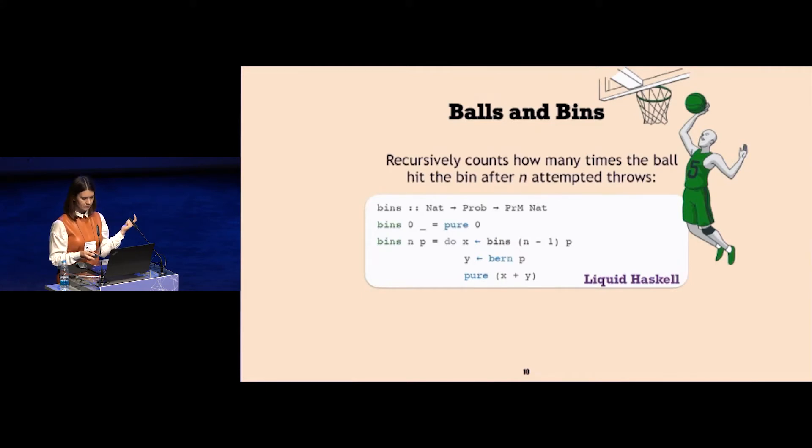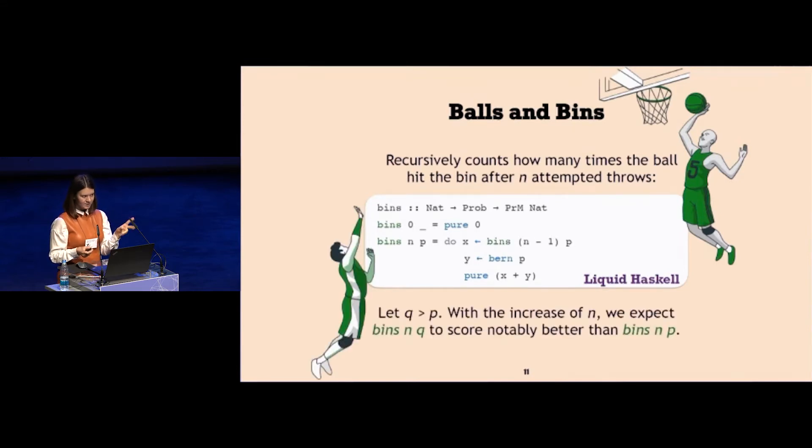Remember we had two basketball players and a relational property about them. It becomes the relational property between two programs. Now we're interested to find out how the result of program bins with parameter p relates to program bins with parameter q.